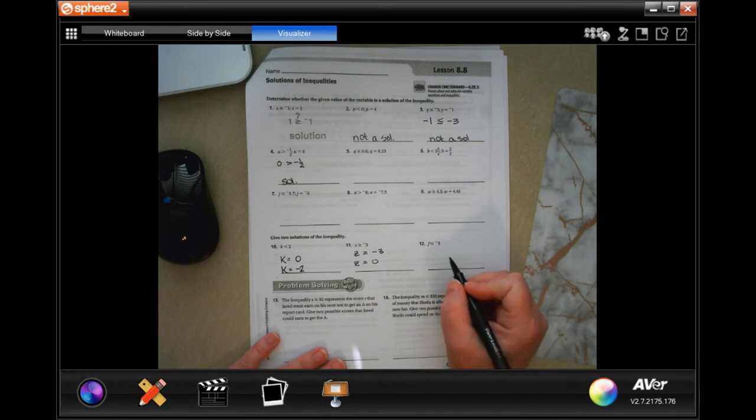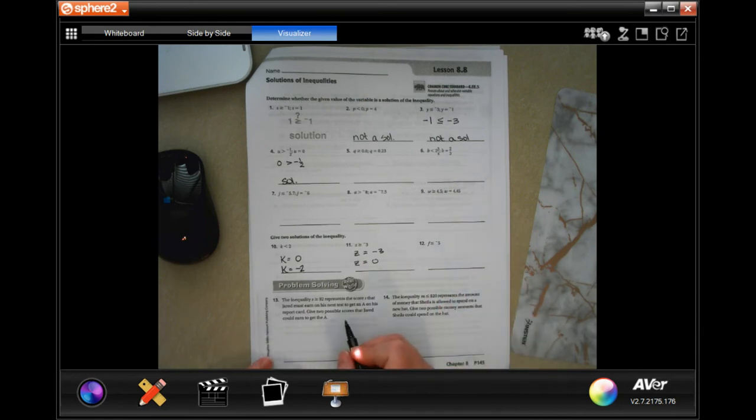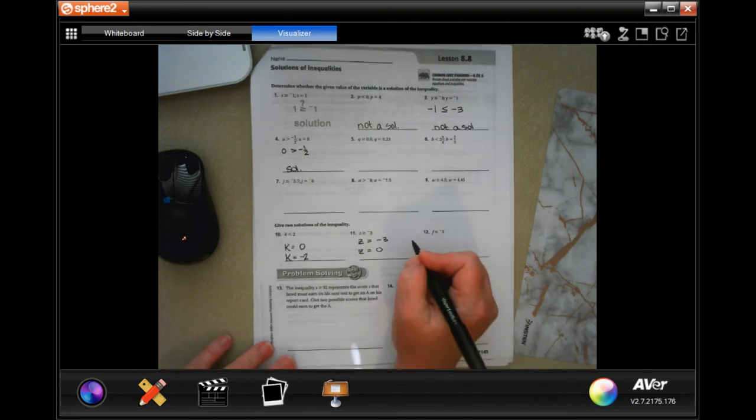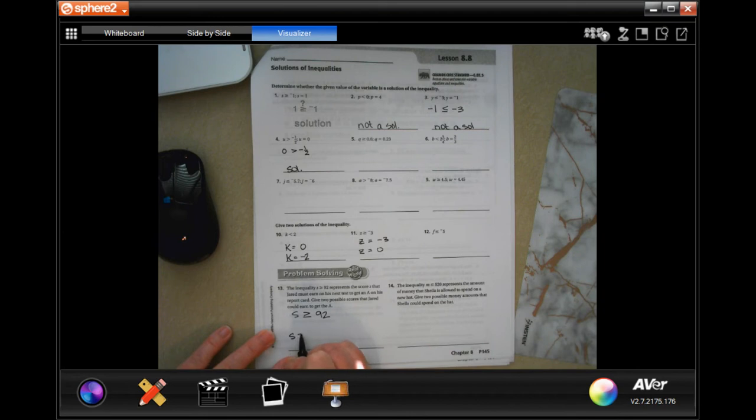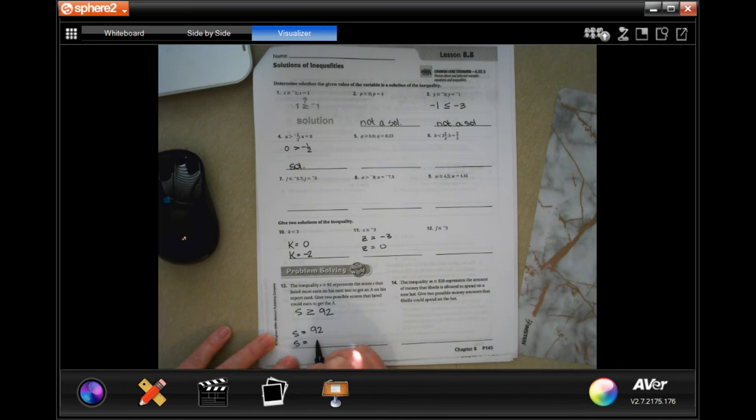You guys do number 12, and we're going to go down and do number 13. So the inequality of s is larger than or equal to 92 represents the score s that Jared must earn on his next test to get an A on his report card. Give two possible scores, so we're doing exactly the same thing here, and it says s is bigger than or equal to 92, so s could equal 92, s could equal 95, s could equal anything 92 or bigger.